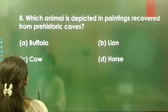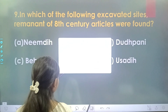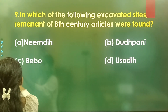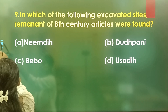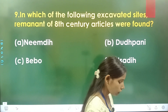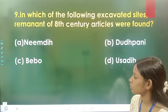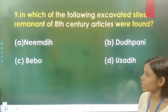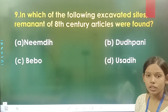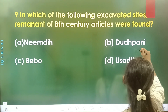Question number 9: In which of the following excavated sites were remnants of 8th century articles found? Option A is Nimdi, option B is Doodh Pani, option C is Bebo, and option D is Usadi. The correct answer is option B, Doodh Pani.